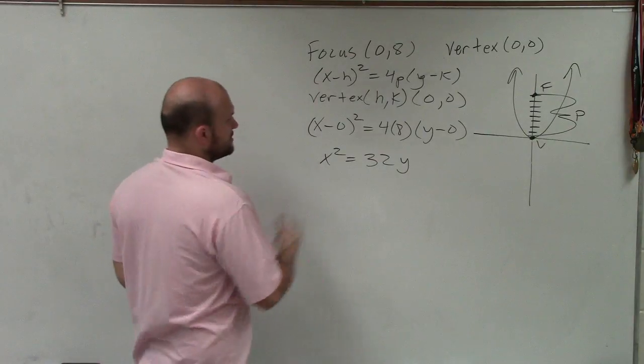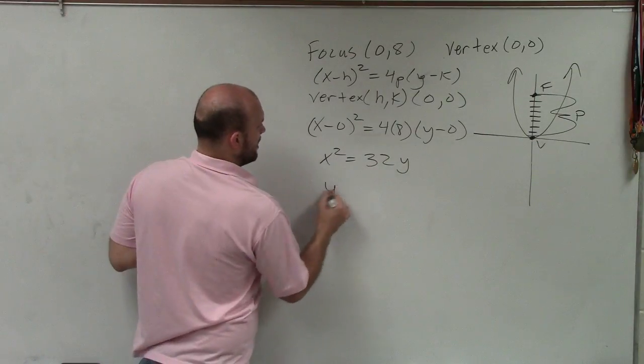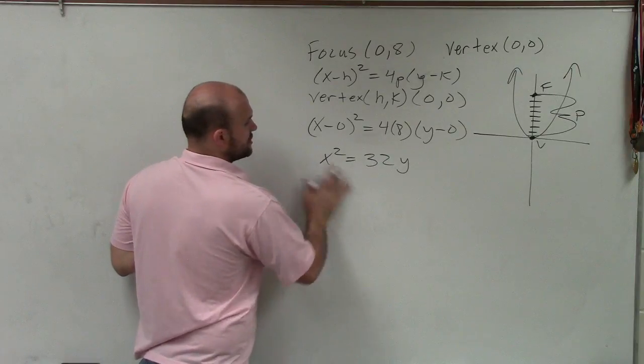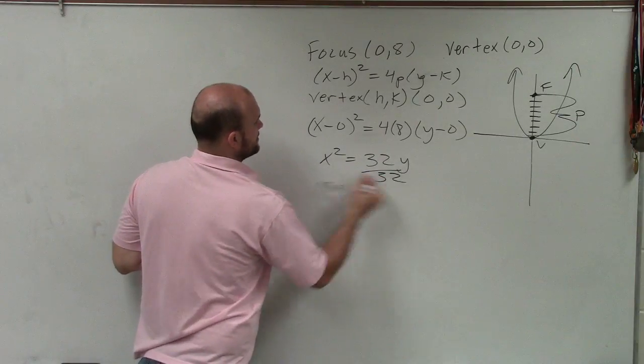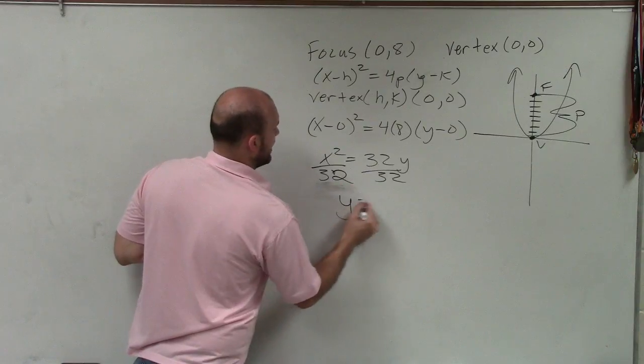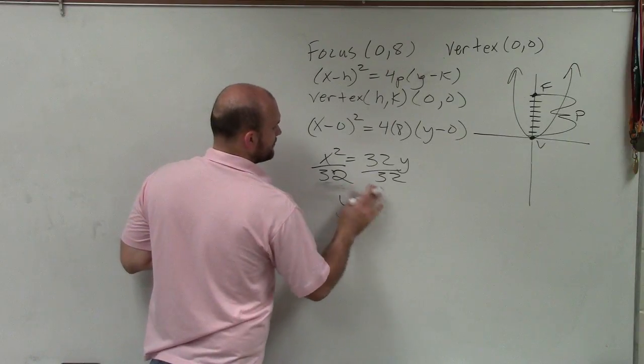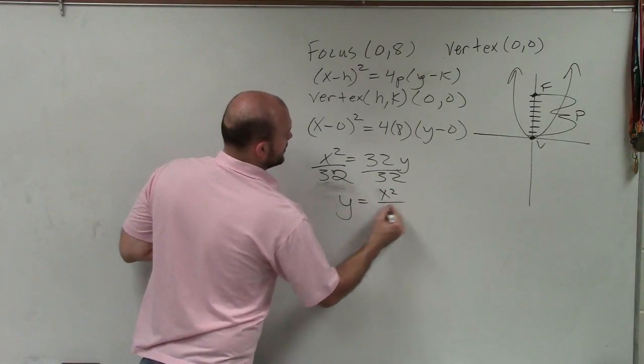So now, just to go ahead and solve for y here, I can write y equals... So to solve for my y, I'll just divide by 32, divide by 32. And I get y equals x squared over 32.